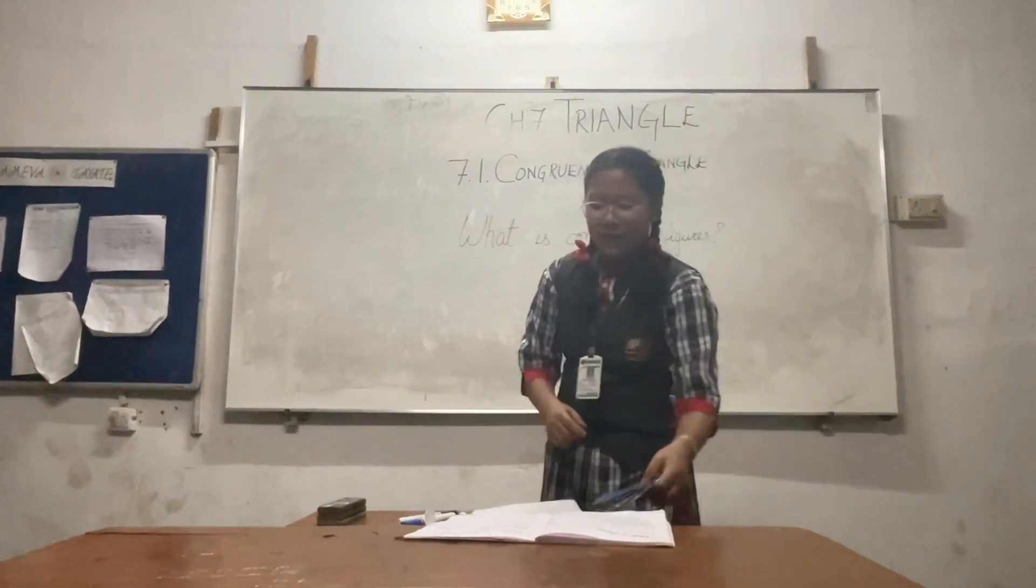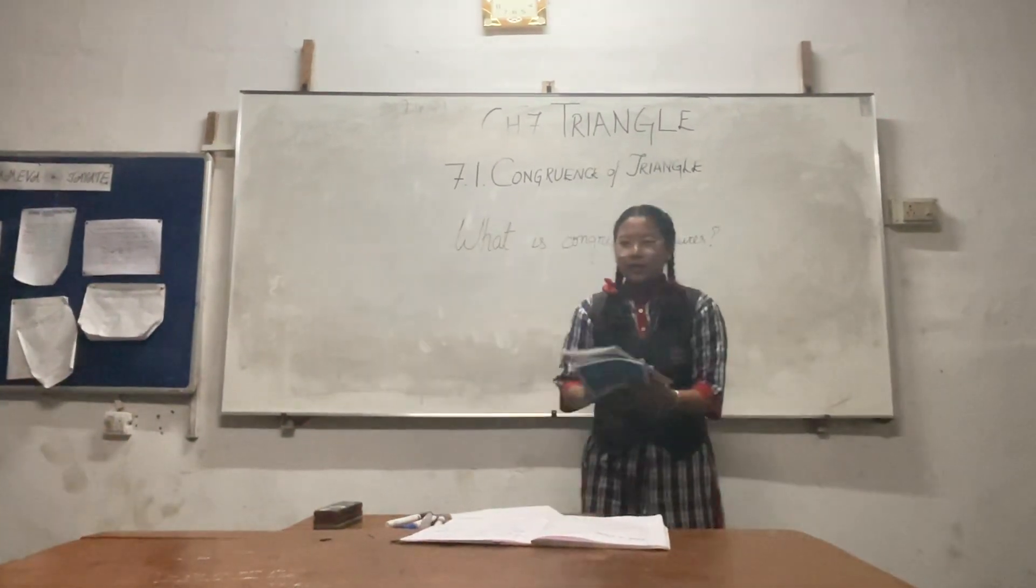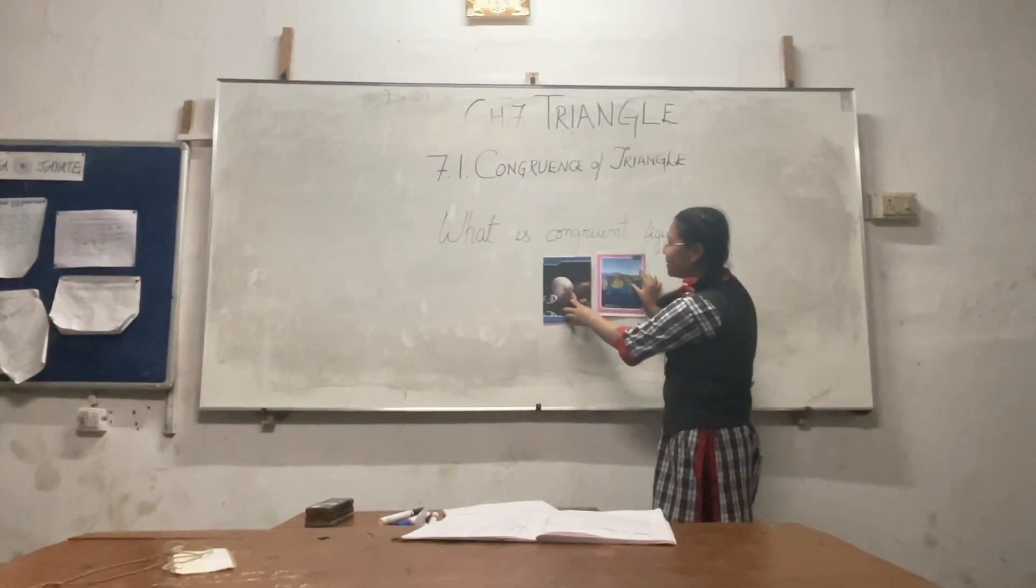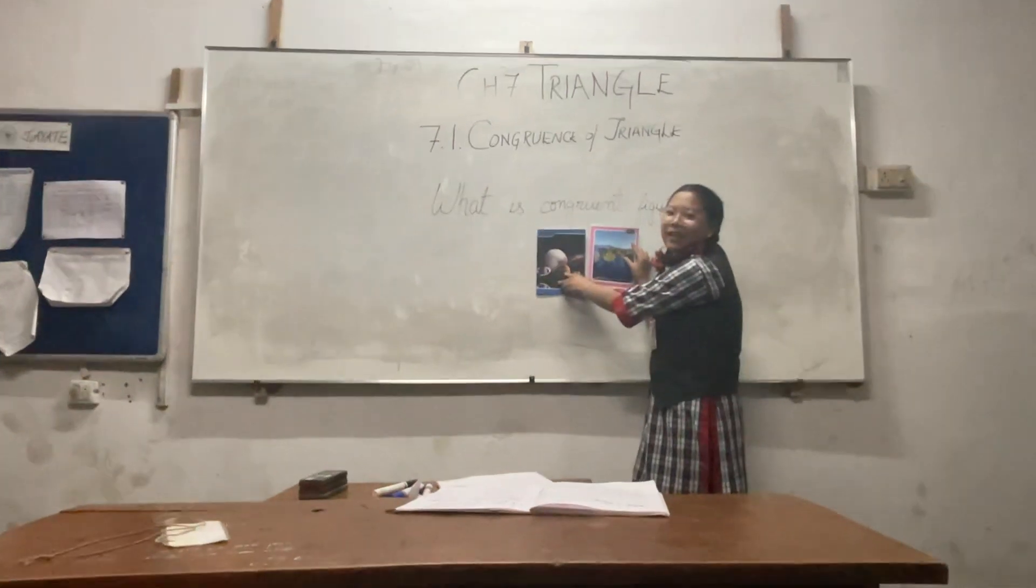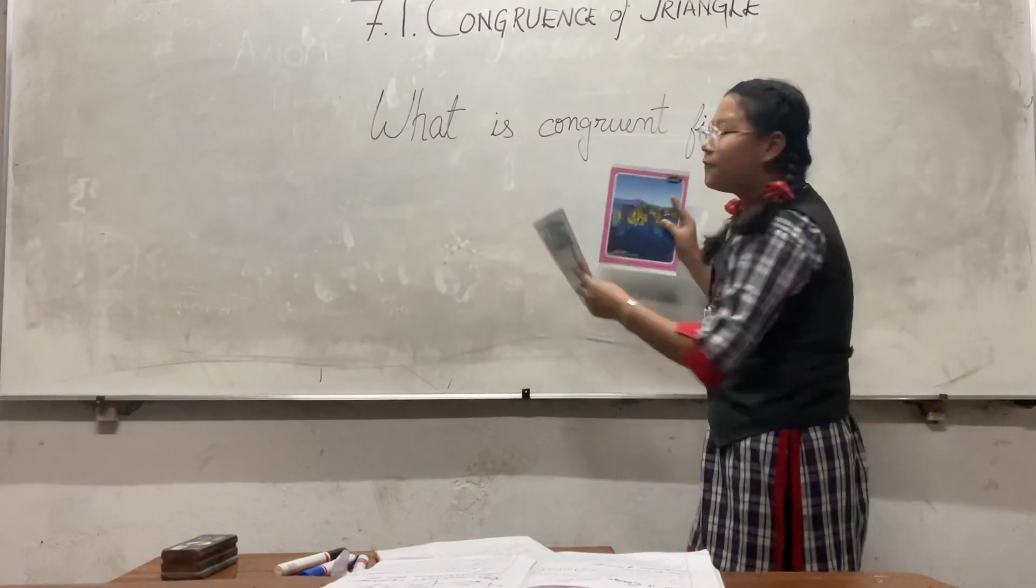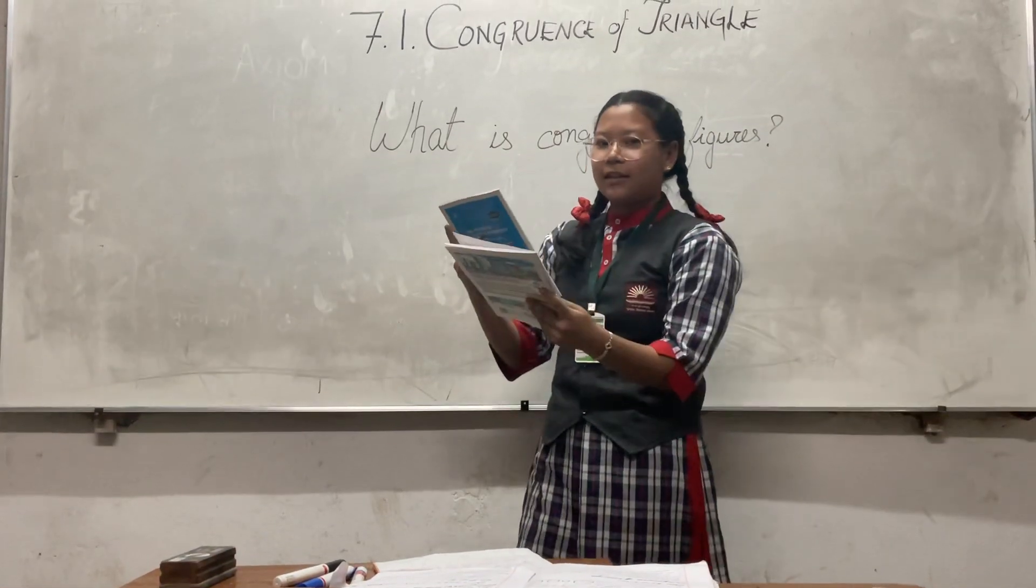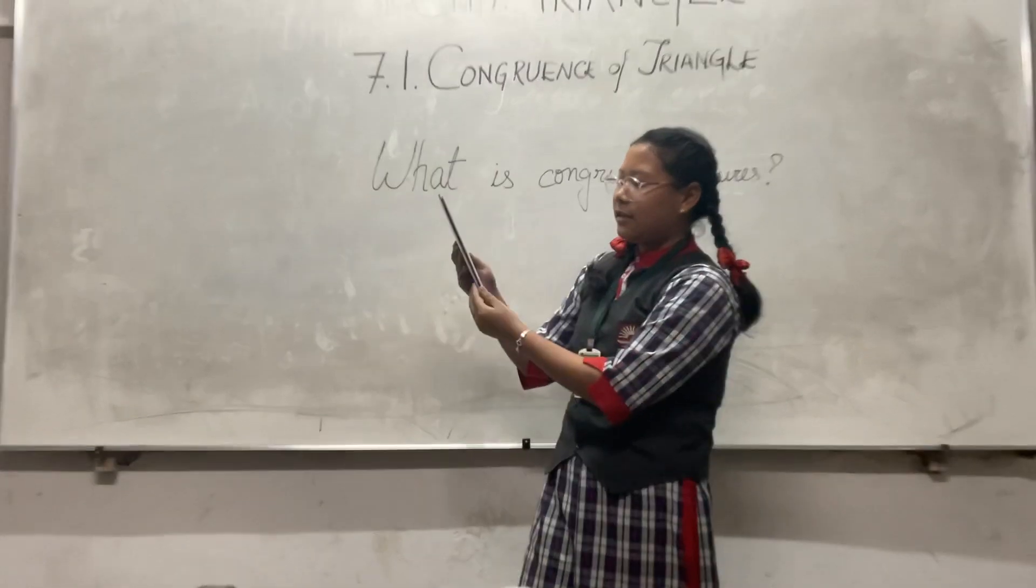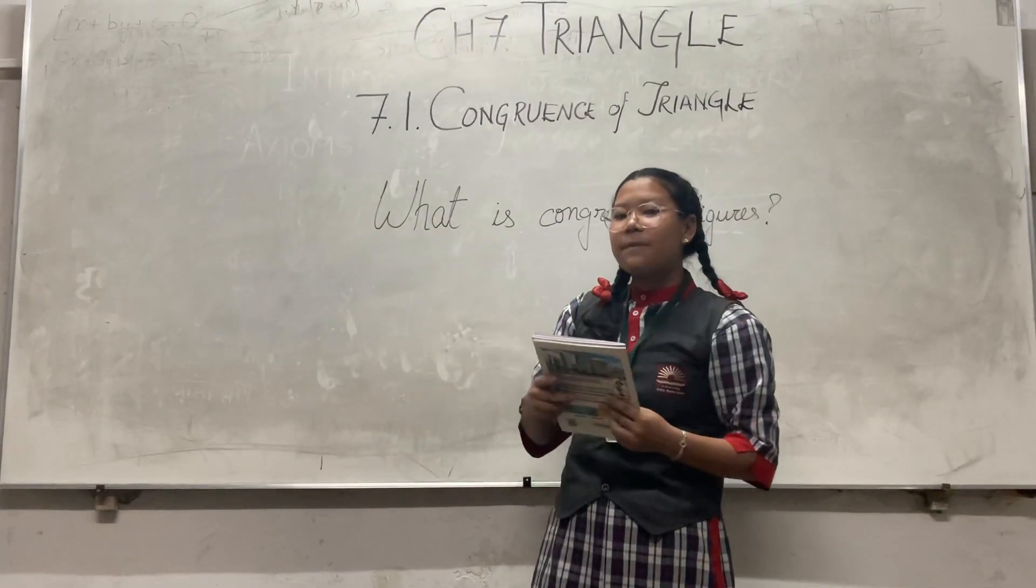For example, we take this notebook. These two notebooks have the same size and shape, and of course I cannot get the same picture. So, as I said before, if we take these two and if we place this, and it coincides, it is equal. It is also same in congruence.